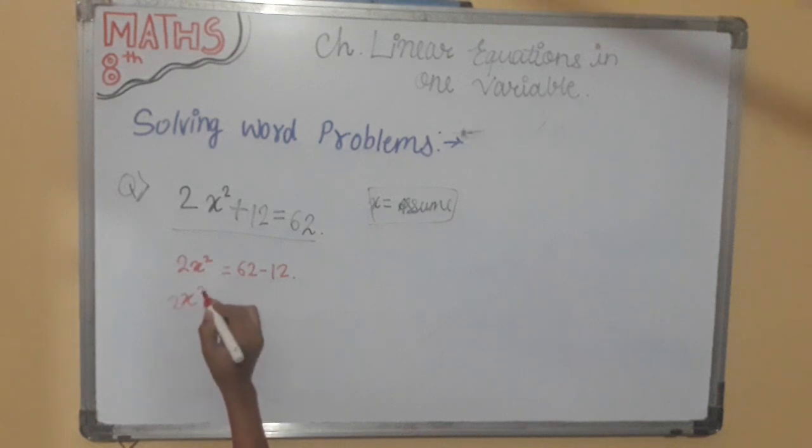2x square is equal to 50. 62 minus 12 is 50. After that we will transpose 2 to division.